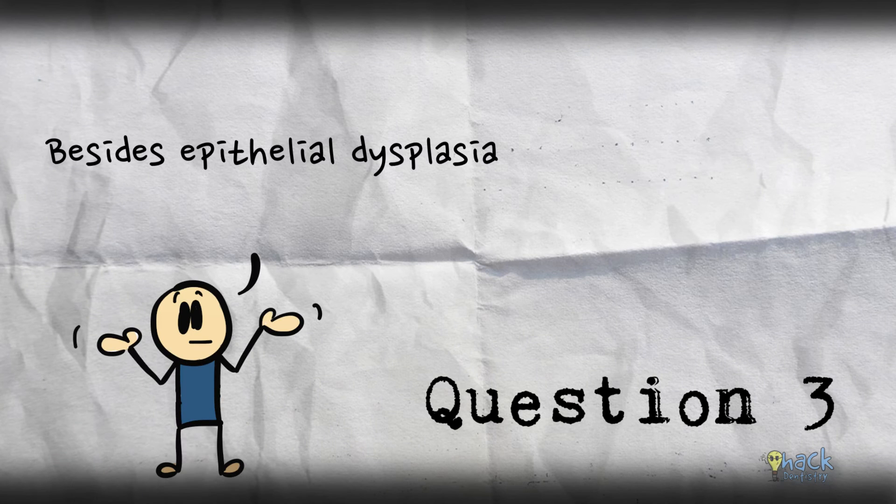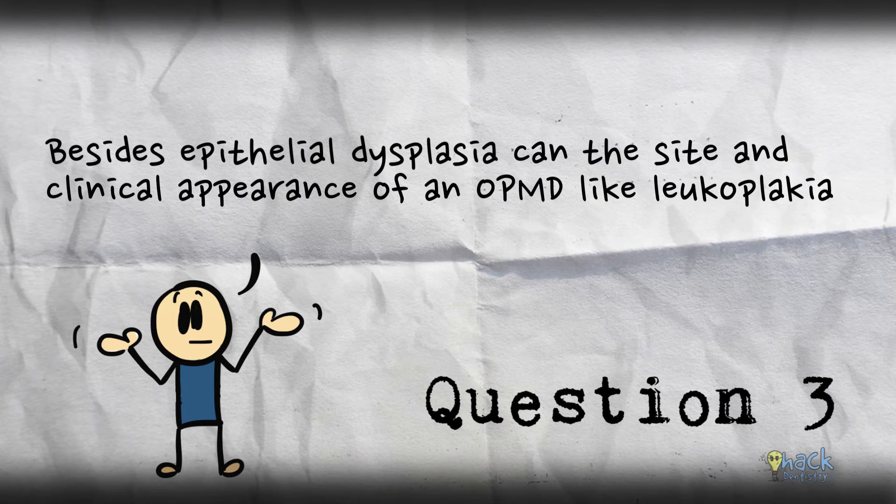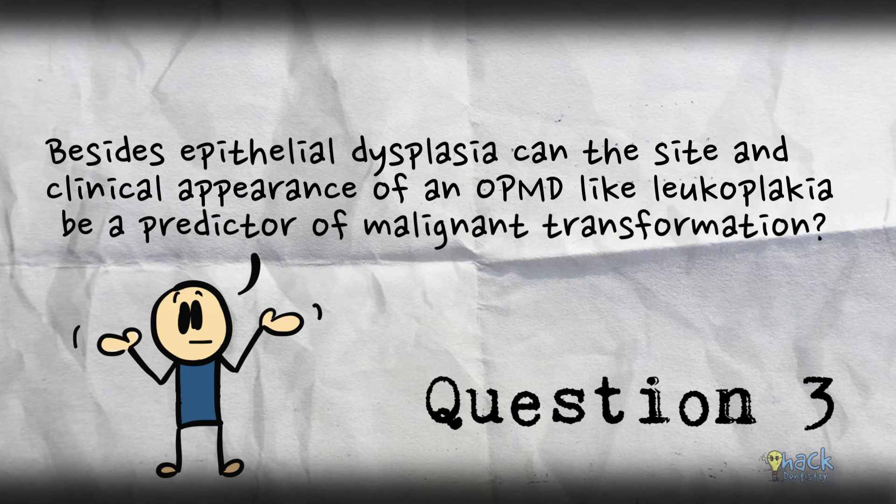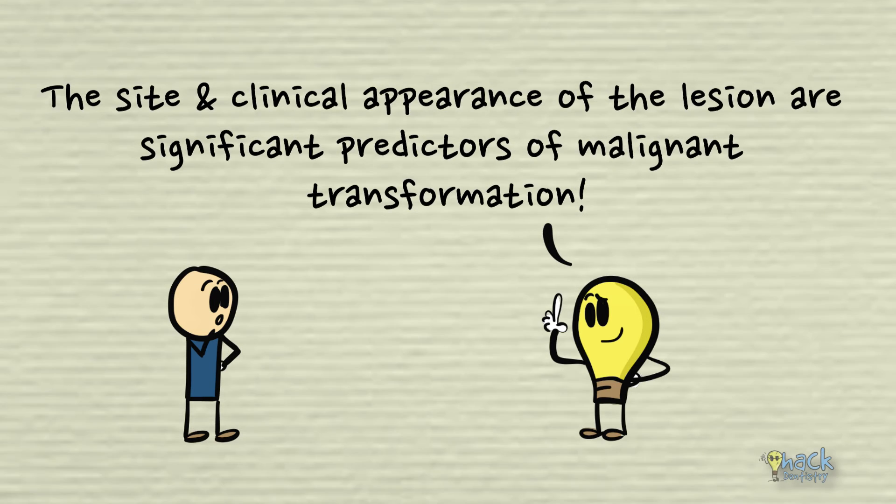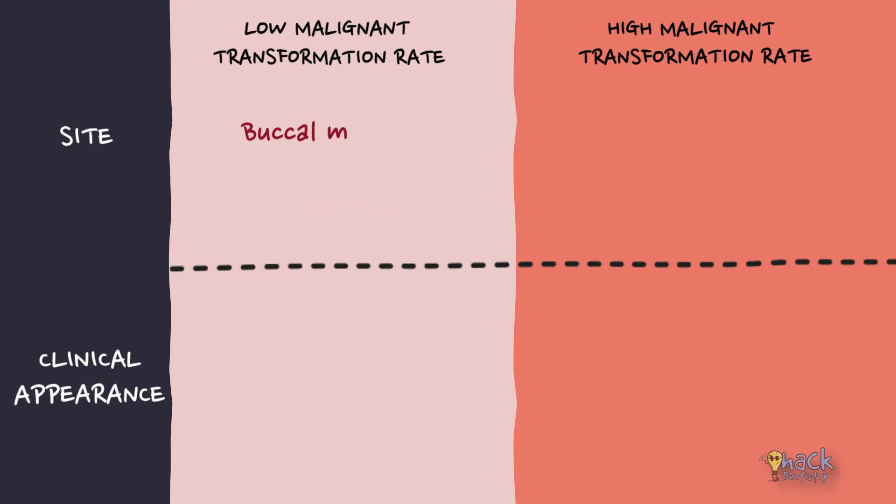Besides epithelial dysplasia, can the site and clinical appearance of an oral potentially malignant disorder like leukoplakia be a predictor of malignant transformation? Absolutely, they are significant predictors of malignant transformation. Lesions on the buccal mucosa have been found to have low malignant transformation rates.